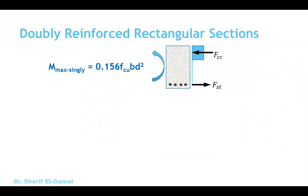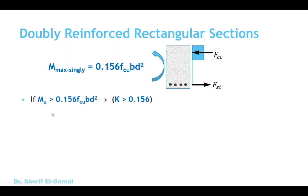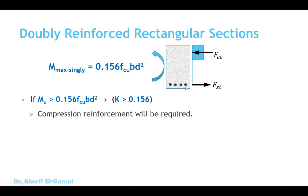For a singly reinforced rectangular section, the maximum capacity equals 0.156 Fcu·b·d². If the ultimate applied moment is greater than this maximum — meaning K is greater than 0.156 — the section requires compression steel. Singly reinforced is not enough, so we need to add compression steel and change the section to a doubly reinforced concrete section.